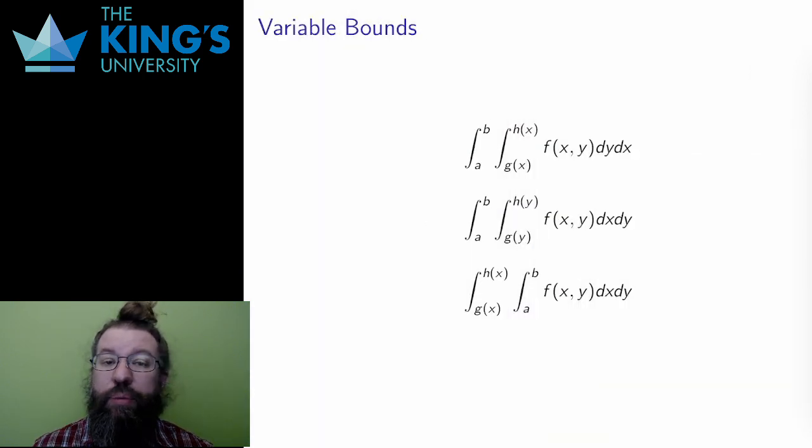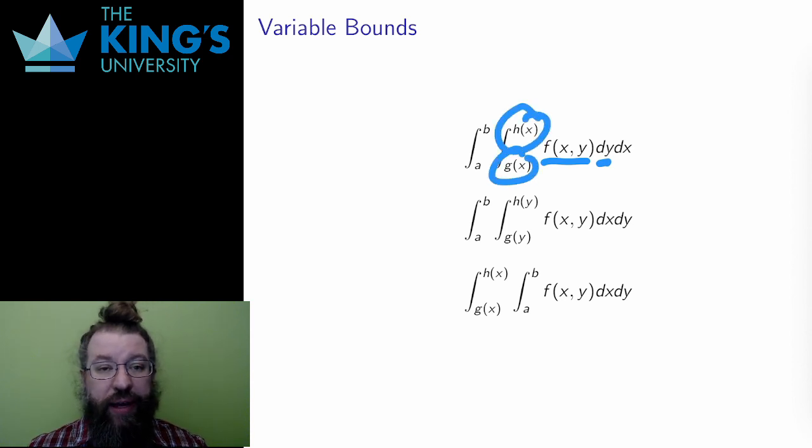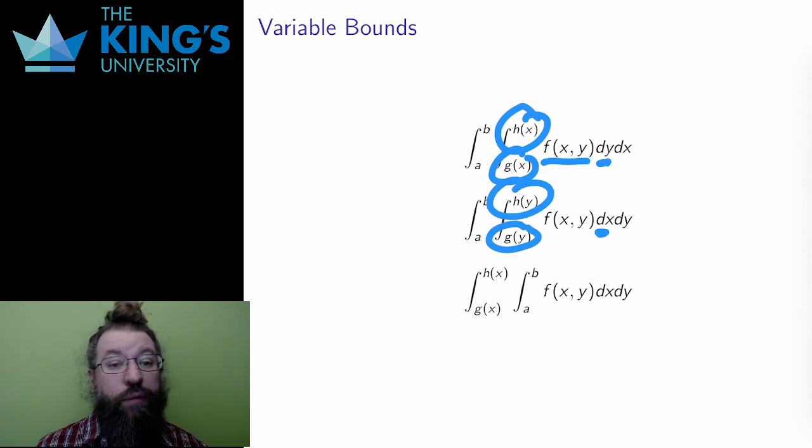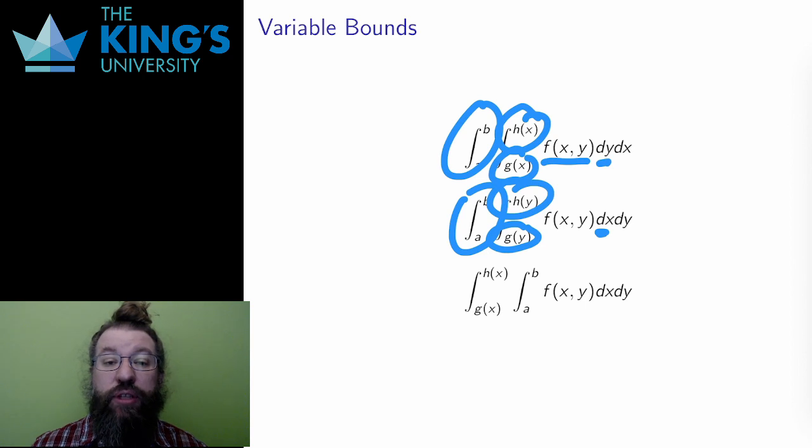Let me recap in general. For integration of a function of two variables, if y is the inside function, its bounds can depend on x. But if x is the inside function, its bounds can depend on y. However, the outside bounds must be constant. I can't have the outside bounds on y depending on the inside variable. This doesn't make sense. And finally,